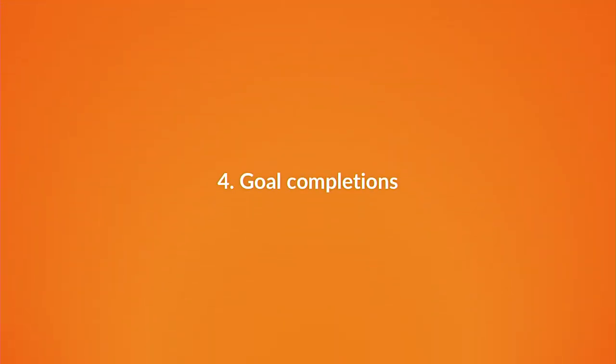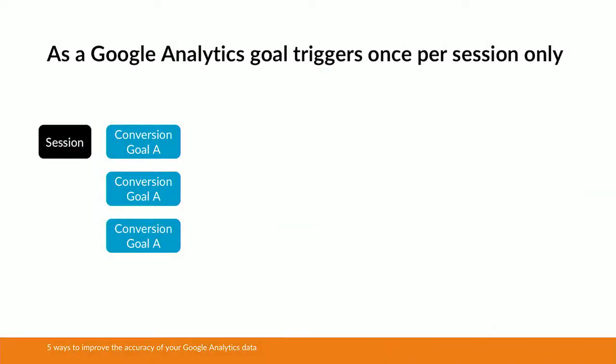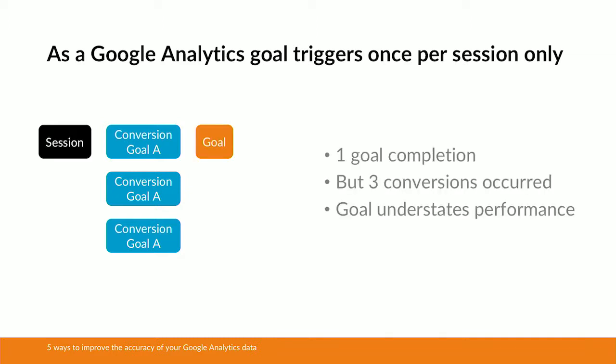Now we're going to move on to number four: the goal completions metric. The goal completions metric will not measure every single conversion, and the reason for that is Google Analytics goals trigger once per session only. So take this example where a session arrives at the site, goal A is triggered three times within the session, and then the user exits. There are three unique conversions that have occurred here, but Google Analytics is only going to record one goal completion for that session. So in effect the goal completion metric is actually understating the performance of your conversion.